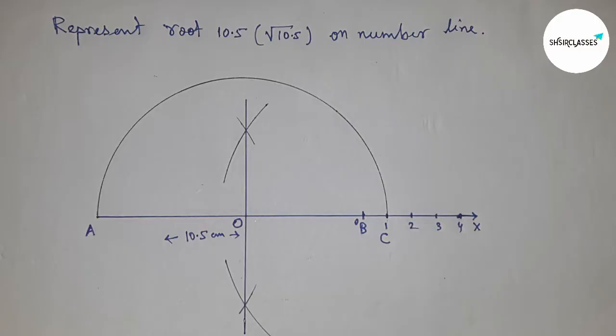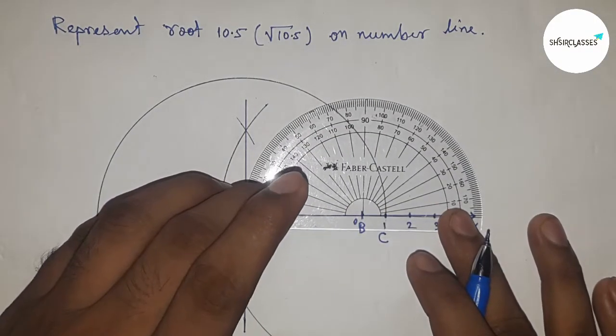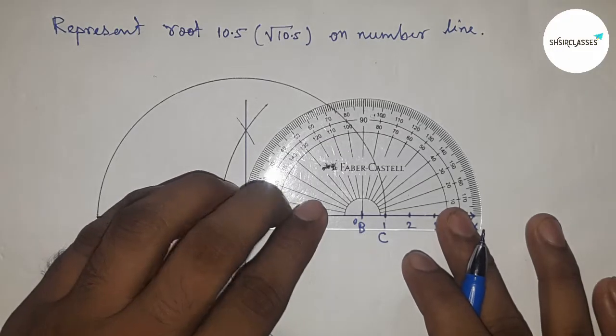Next, construct a 90 degree angle on point B by using a protractor.